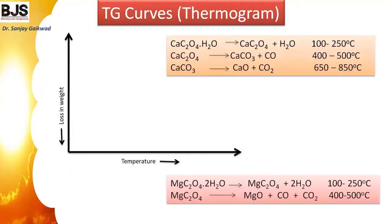In this technique we measure weight loss as a function of temperature. For example, with calcium oxalate: the sample is placed in the holder, kept in the furnace, and heating begins. As temperature increases from ambient, the first weight loss is observed at 100 to 250 degrees Celsius, due to adsorbed water, coordinated water, or lattice water present in calcium oxalate being removed. Then a second loss occurs where carbon monoxide is removed from calcium oxalate to form calcium carbonate at 400 to 500 degrees Celsius.